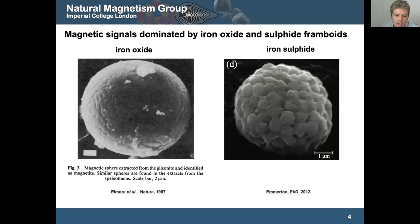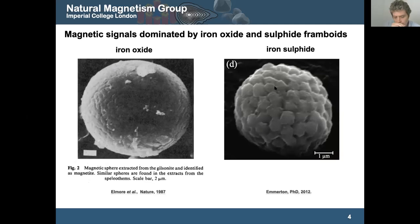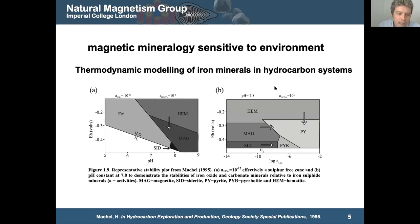Here we have a study from 2000 from the group in Venezuela with three cores. The two on the left are above hydrocarbon reservoirs and the one on the right is not, and you can see there are spikes in the susceptibility with much higher values. There's clearly some kind of link between the presence of hydrocarbons in the ground and the magnetic signal of rocks. There are also these wonderful framboids of iron oxides and iron sulfides documented since 1987 by Doug Elmore — this is another magnetic response seen in association with hydrocarbons.